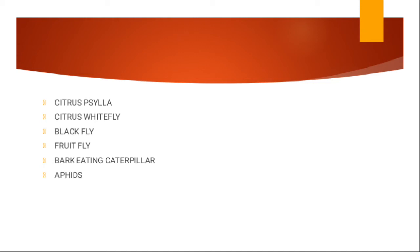We have the citrus psylla. Then we have the citrus whitefly. Then we have the black fly. Then we have the fruit fly. As I mentioned, all of those I've mentioned above — except the fruit fly — they attack the leaves. Then for the fruit fly, in most cases they attack ripe fruits.